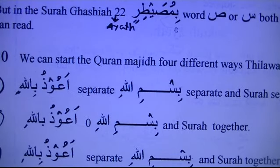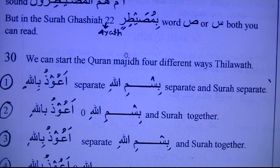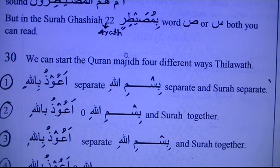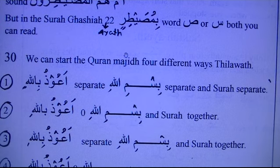Now I will explain rule number 30. When we read the Quran, we start with A'uzubillah and Bismillah. Sometimes even my students are confused about why a certain Sheikh recites a certain way — thinking he is wrong or right. So just for your knowledge, I'd like to explain how many ways we can start the Quran.